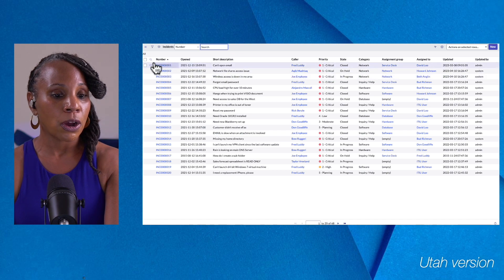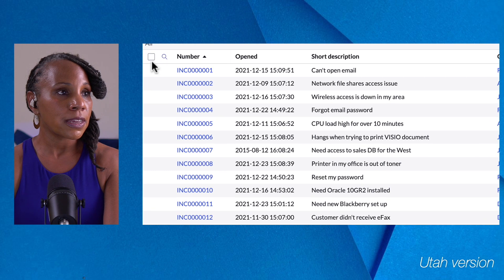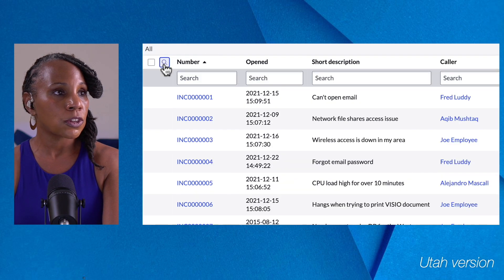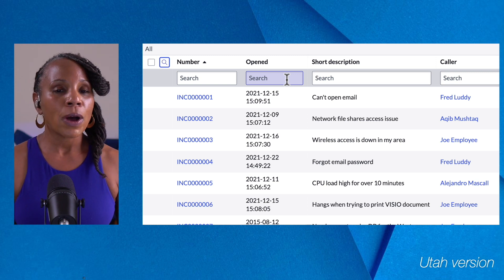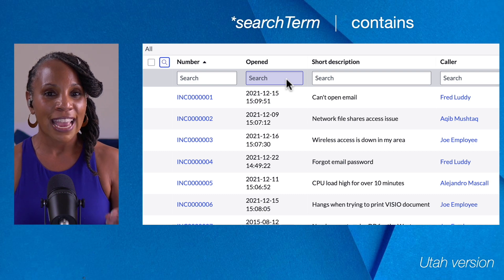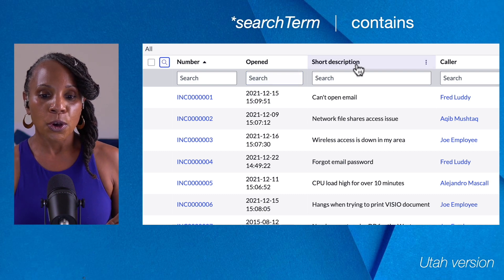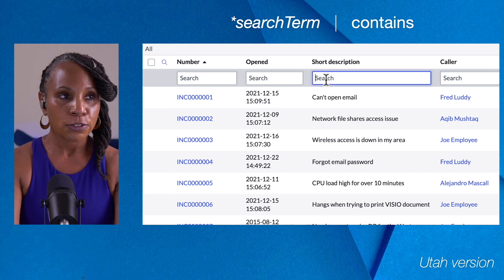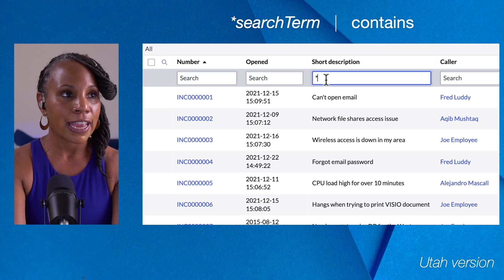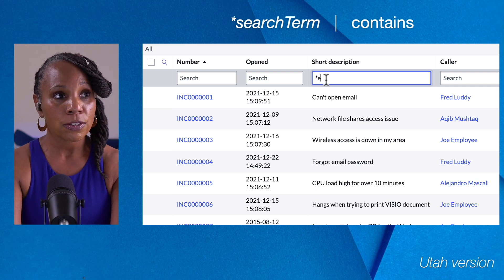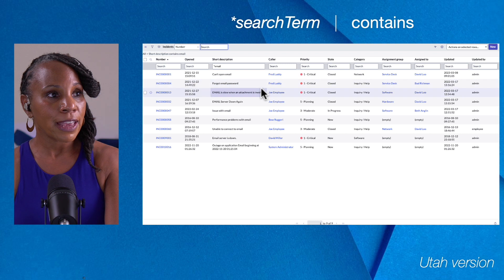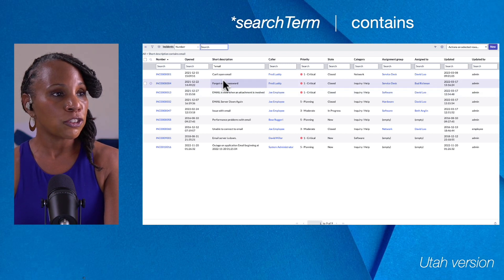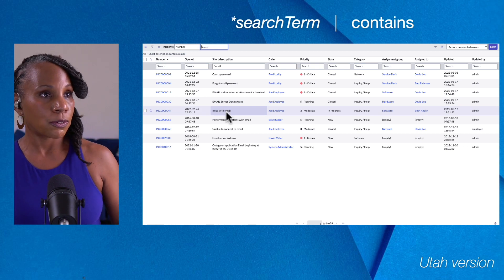Here in the upper left-hand corner, you can see a magnifying glass icon. We'll select this icon to do a column search. The first wildcard I'll share allows us to find records that contain a particular search term. We'll go over to the Short Description field and type asterisk followed by the word 'email', then hit Enter. This gives us a nice subset of records, each containing the word email.